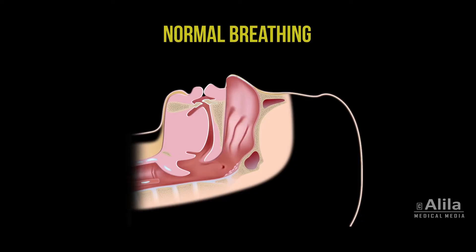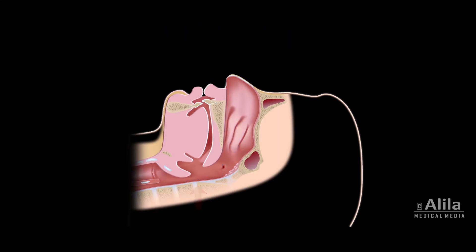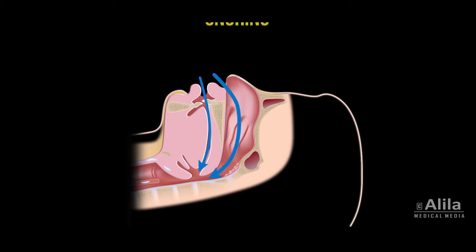While awake, breathing occurs easily through the upper airway. When you fall asleep, all the muscles of the body relax, including the muscles surrounding the airway. When the upper airway muscles relax, the airway walls fall together, limiting airflow. The disrupted airflow can cause the airway walls to vibrate, making the sound we call snoring.